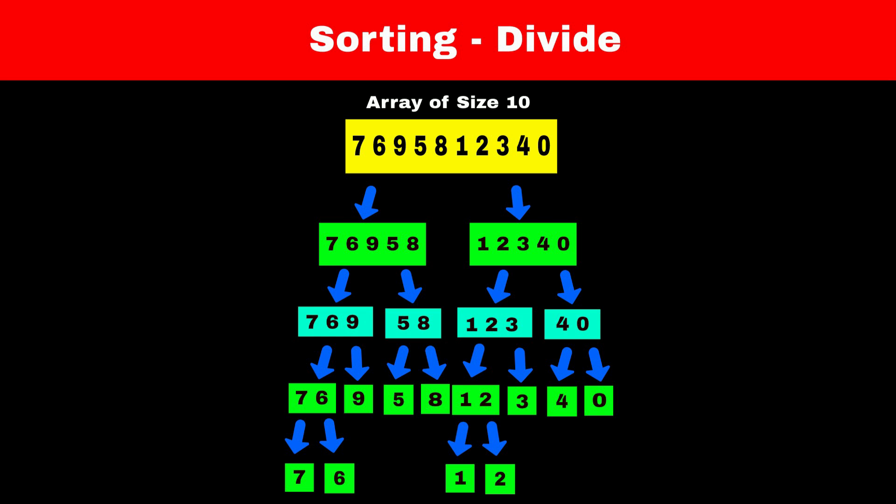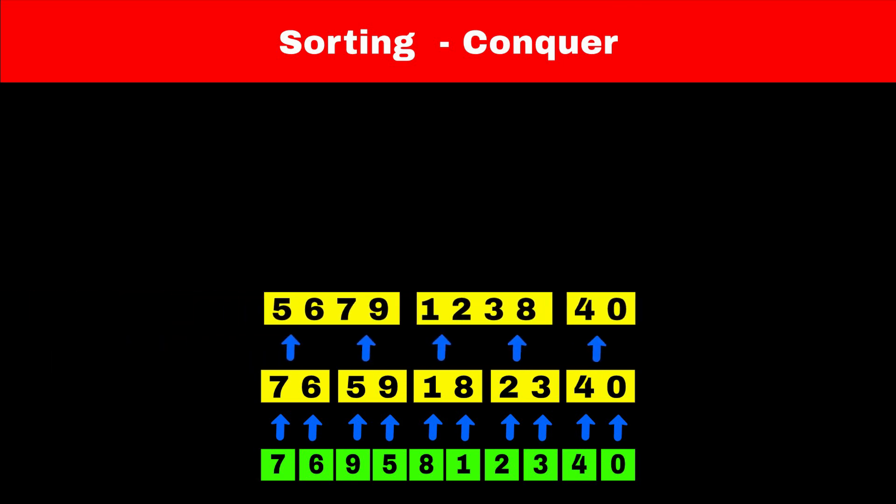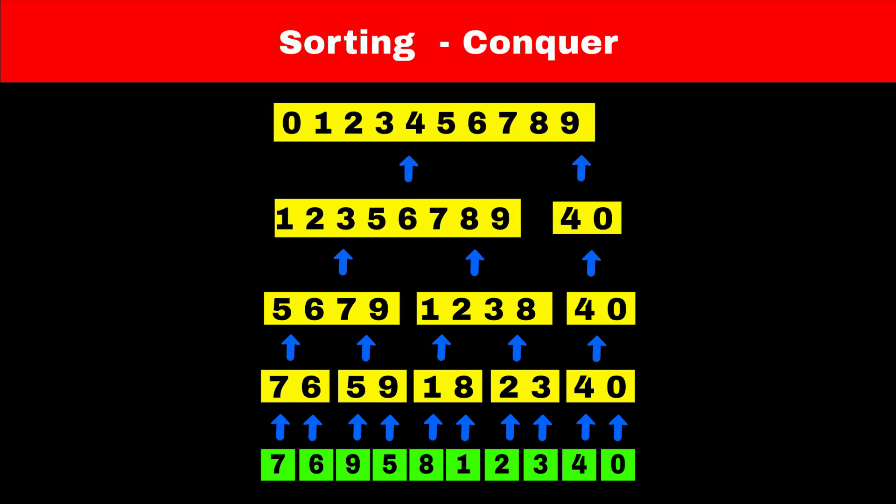The next step is to merge the solution of 2 problems to get the actual solution. We will merge the 2 arrays of size 1 in sorted order to get the sorted array of size 2. Further we will merge the 2 arrays of size 2 to get a sorted array of size 4, and we will merge it until we get the sorted array of size 10. Since we are merging the sorted arrays, that is why this algorithm is called merge sort.